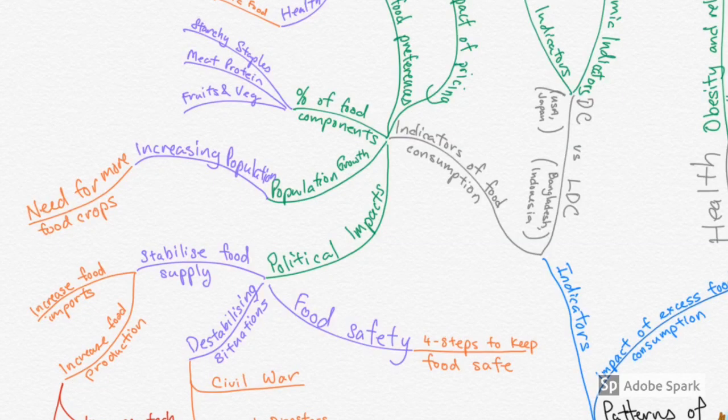The next wing we are going to look at is, of course, population growth. From a logical standpoint, when you have an increasing population, there is a drastic need for more food to feed this population. So, there are certain things that we will talk about subsequently in the chapter, on how to attain this more food crops.